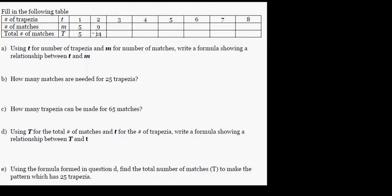Fill in the following tables. We have a small t for number of trapeziums, number of matches m, and total number of matches. What is this table telling us? If there's one trapezia, you have five matches. Let's draw a trapezia like this — one, two, three, four, five — so this is what it means.